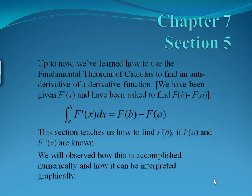Chapter 7, Section 5. Up until now, we've learned how to use the fundamental theorem of calculus to find an antiderivative of a derivative function. We've been given f prime of x and we've been asked to find f of b minus f of a. This section tells us how to find f of b if f of a and f prime of x are known. We will observe how this is accomplished numerically and how it can be interpreted graphically.